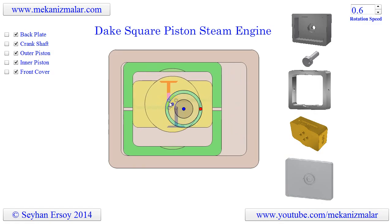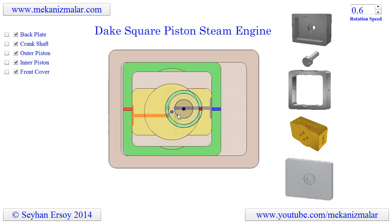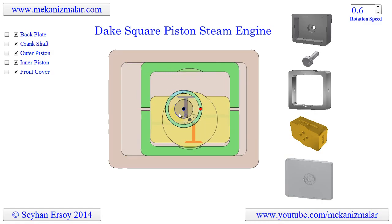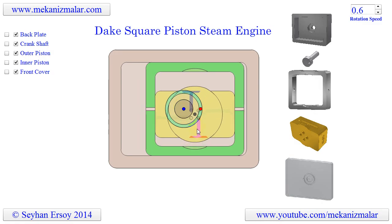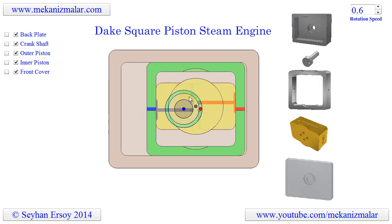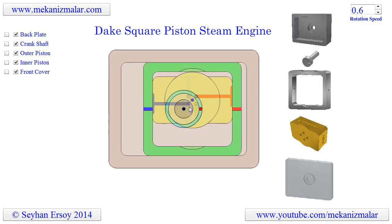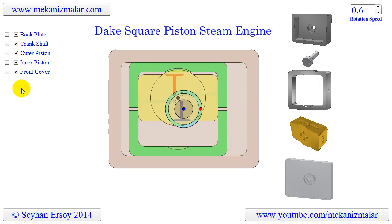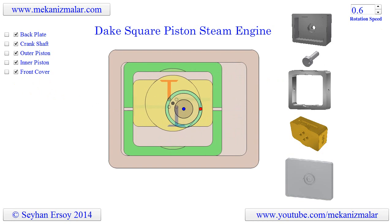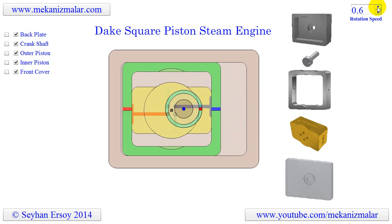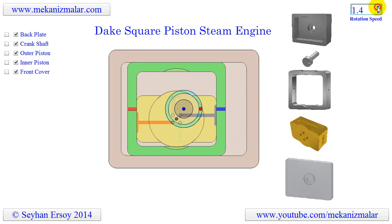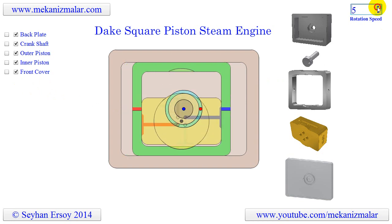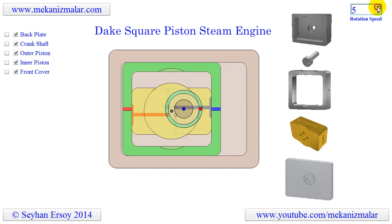Notice how the 4 holes in the center of the inner piston are aligned with the circular groove where the exhaust steam leaves the engine, and the ring groove where hot steam enters the engine. Alignments are always such that if hot steam is aligned with the top hole, the exhaust is aligned with the bottom hole, or vice versa. Similarly, if the hot steam is aligned with the left hole, the right hole is aligned with exhaust, or vice versa.